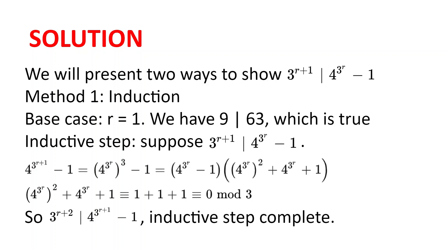And so 3 to the power of r plus 2 divides 4 to the power of 3 to the power of r plus 1 minus 1, and our inductive step is complete.